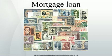Value: appraised, estimated, and actual value. Since the value of the property is an important factor in understanding the risk of the loan, determining the value is a key factor in mortgage lending. The value may be determined in various ways, but the most common are: actual or transaction value — this is usually taken to be the purchase price of the property. If the property is not being purchased at the time of borrowing, this information may not be available.